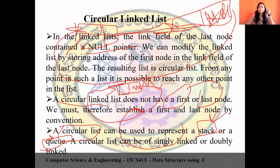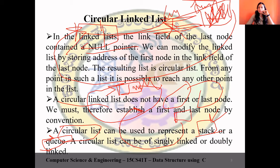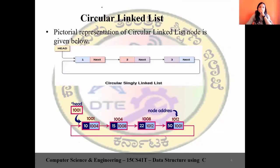In circular linked list, we saw two types last class: one was circular singly linked list, and another was circular doubly linked list. In a doubly linked list, each node has three fields — a pointer to the next node and a pointer to the previous node. This diagram was seen last class; we are revisiting it to understand the difference.